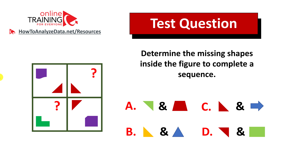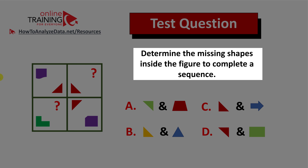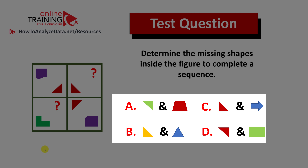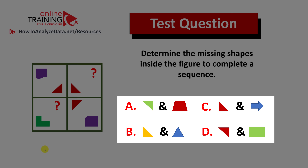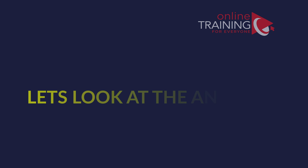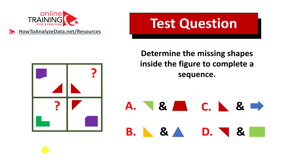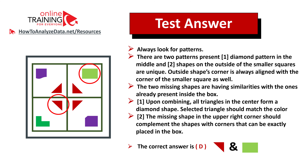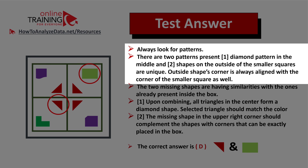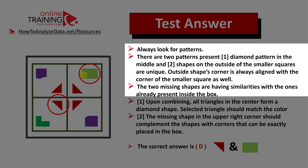Let's look at an interesting question which tests your pattern recognition skills: determine the missing shapes inside the figure to complete the sequence. You're presented with a two-by-two figure with two missing shapes and four possible choices A, B, C, and D. To solve these types of problems, look for patterns. There are two patterns here: number one is the diamond pattern in the middle, and number two is the pattern of shapes on the outside of the smaller squares, which are unique and always aligned with their corners.